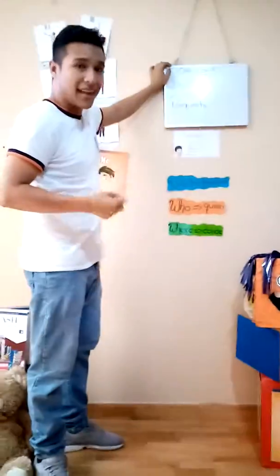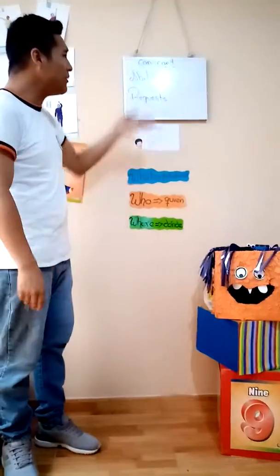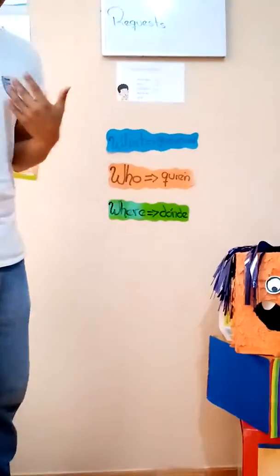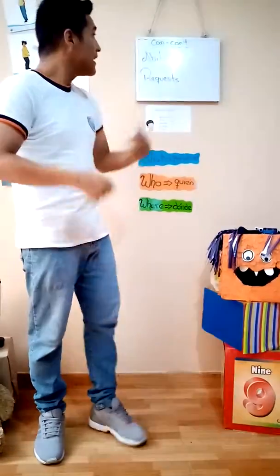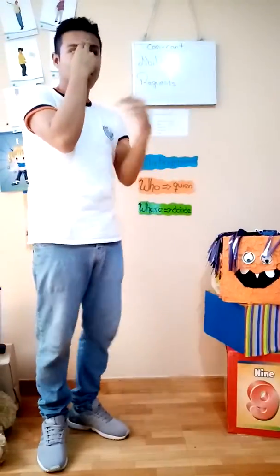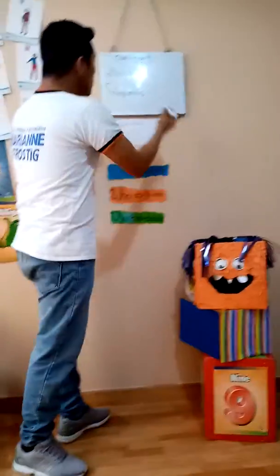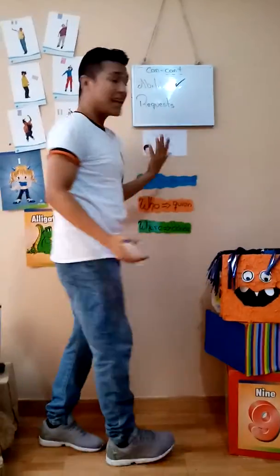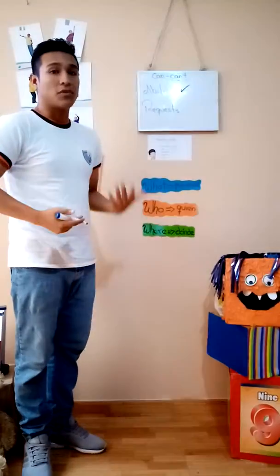Can versus can't. We use can and can't to talk about abilities. For example, I can play soccer, I can dance, I can jump — those are abilities, actions that I can do. Can't is for negative. For example, I can't fly, I can't teletransport. We use can and can't to talk about abilities — actions that you are able to do in your life.